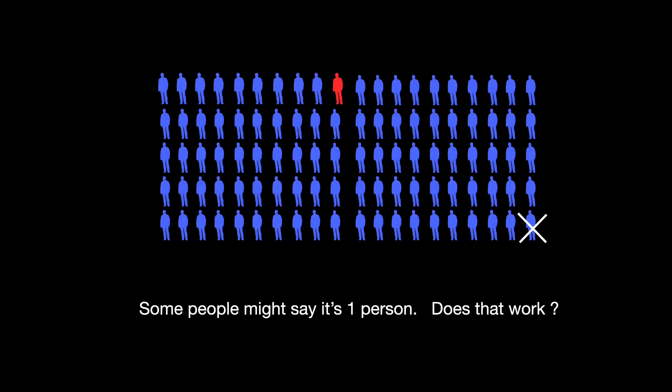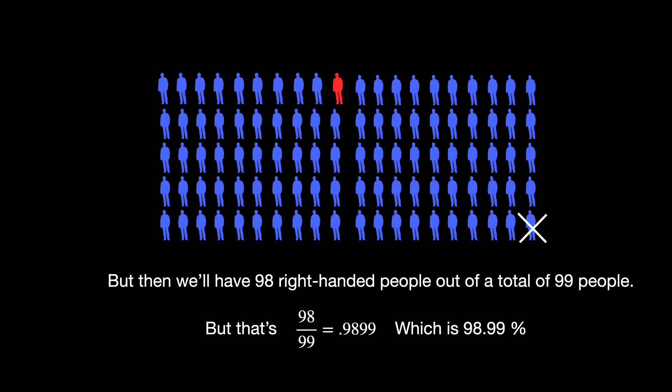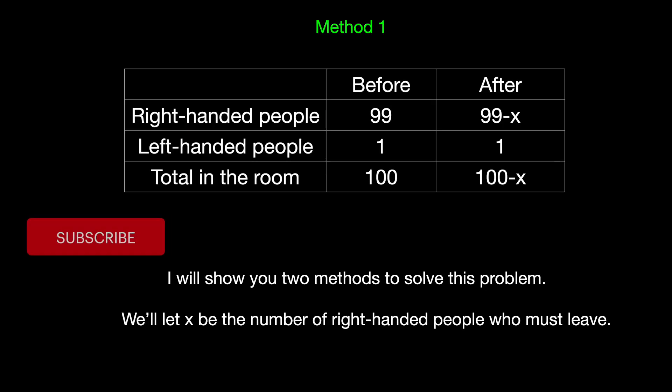Some people might say it's one person. Does that work? But then we'll have 98 right-handed people out of a total of 99 people. But that's 98 divided by 99, which is 98.99%. I will show you two methods to solve this problem.